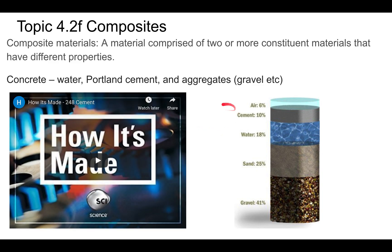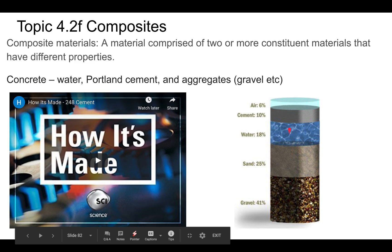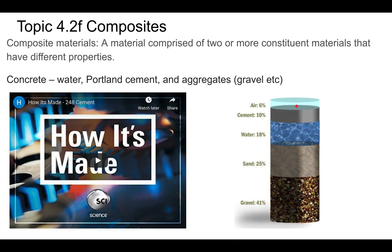Concrete is our first composite example. Concrete is essentially made out of water, Portland cement, and aggregates — things like gravel, sand, and air. When making concrete, you take limestone, crush it up, and heat it to get rid of the water and CO2 in it. Once you've done that, you get something called lime or cement. You mix it with aggregate, add water, and you basically get a pourable rock.